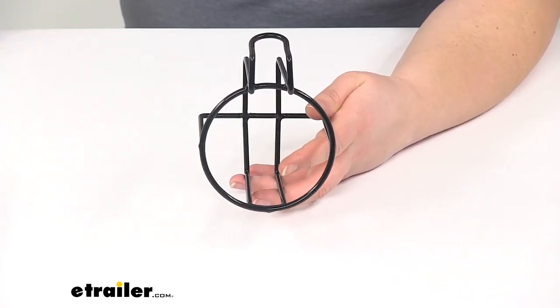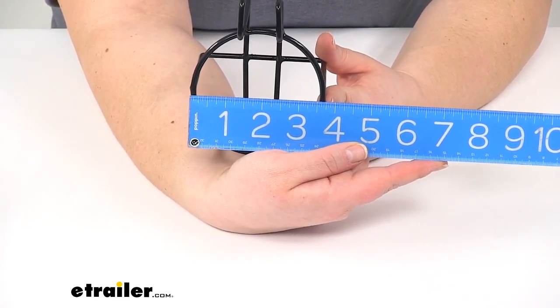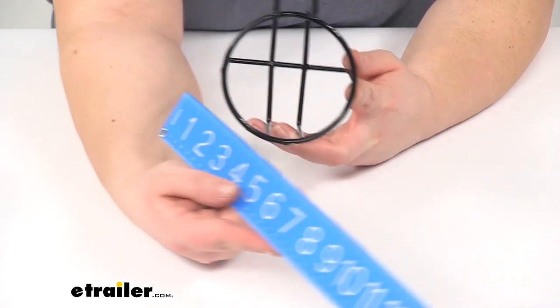The inner diameter there from inside edge to inside edge is going to be about 3 3/8 of an inch, and then it's going to be the same going down, so it'll be about 3 3/8 of an inch deep.